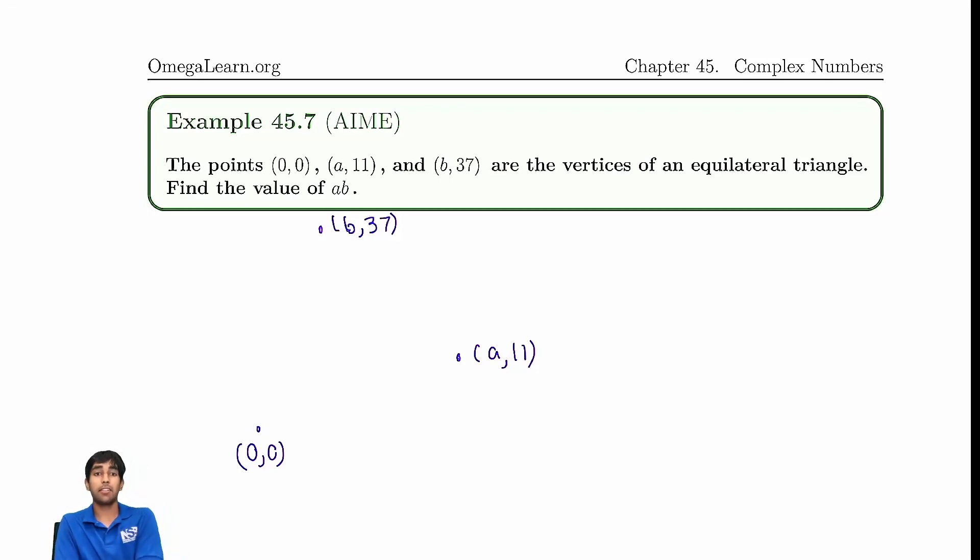Well, geometry, that's hard. I mean, you can solve this with geometry. You can write three equations: square root of b squared plus 37 squared equals the square root of (b minus a) squared plus 26 squared equals the square root of a squared plus 121. Two variable equations. You can solve that, but good luck with that. That's very hard and going to take a lot of tedious algebra for sure.